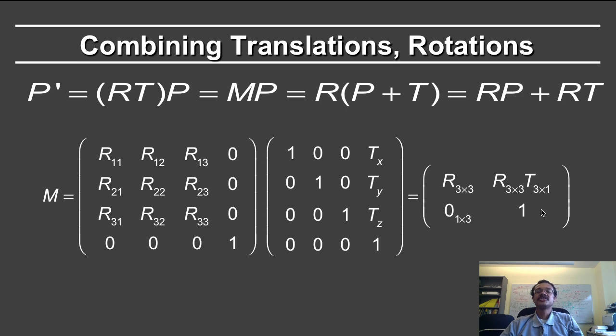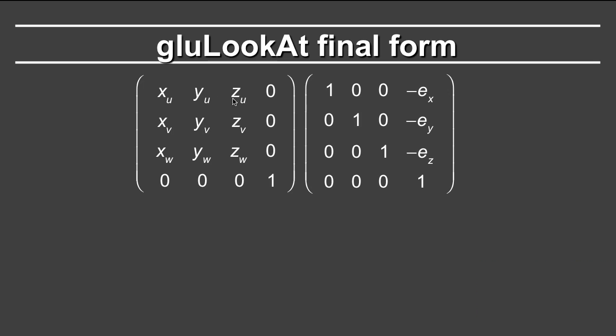In this case, translation vector is the eye coordinate or really the minus eye coordinate because I have to do the inverse translation to the world. And the rotation matrix are the u, v, and w coordinates of the new coordinate frame. I take the rotation matrix and I take the translation vector which is minus eye.